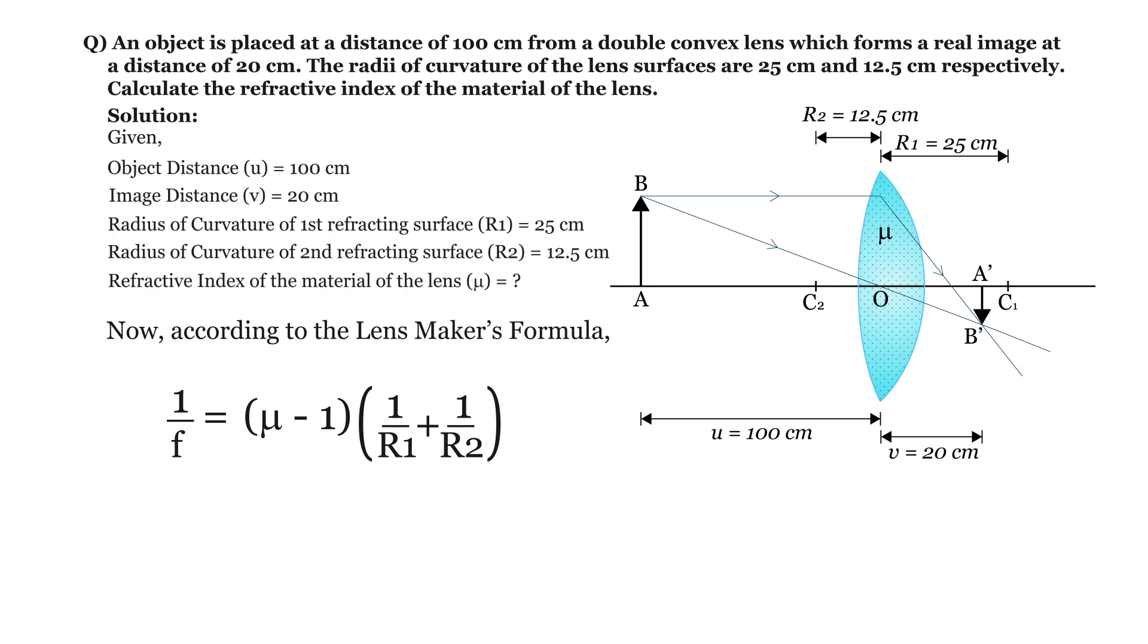The relationship between f, u, and v is given by the lens formula which is 1 by f equals 1 by u plus 1 by v. So in the lens maker formula, we can substitute 1 by f with 1 by u plus 1 by v, and we can solve for mu. Now our equation becomes 1 by u plus 1 by v equals mu minus 1 times 1 by R1 plus 1 by R2.